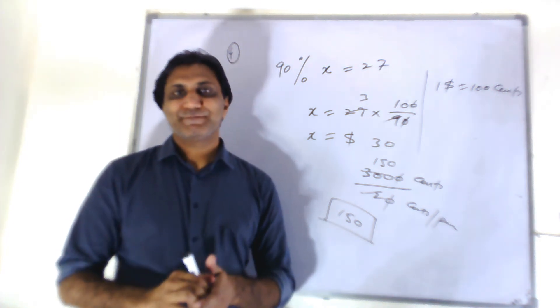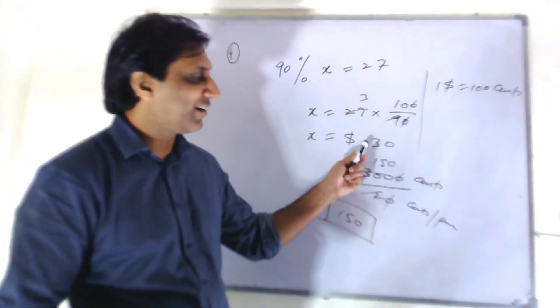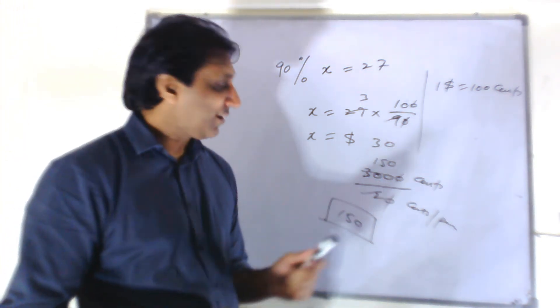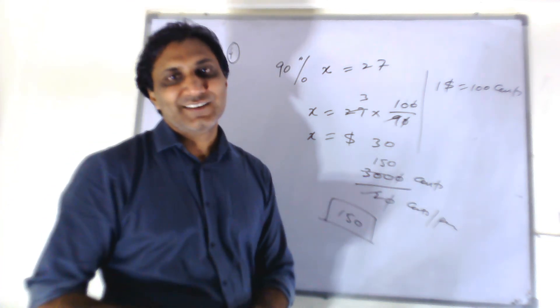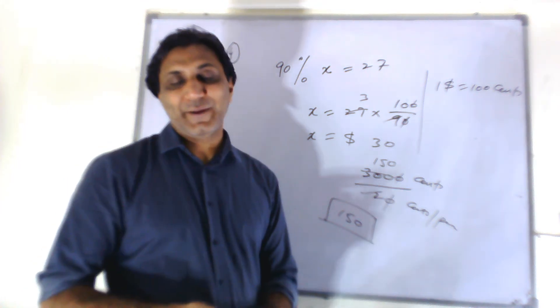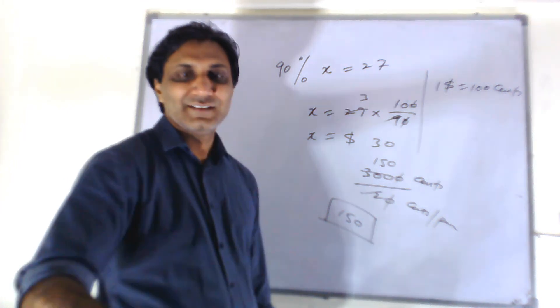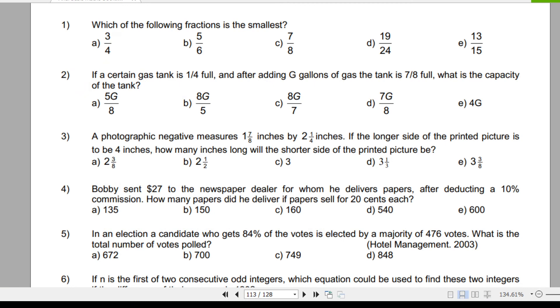Okay? You need to convert it from dollar to cents or you need to convert this from cents to dollar. It's the same thing. So you'll get 150 papers. So the answer to question number four is 150. That is option B.